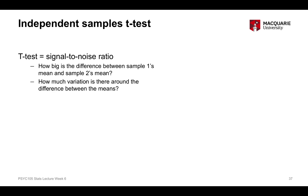Our independent samples t-test is relatively similar to the one-sample t-test discussed previously. The independent samples t-test can be thought of as a signal-to-noise ratio, where the signal is the difference in the mean scores between the two groups and the noise is the variation around that average difference score.